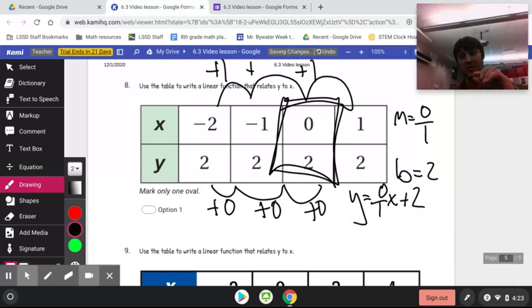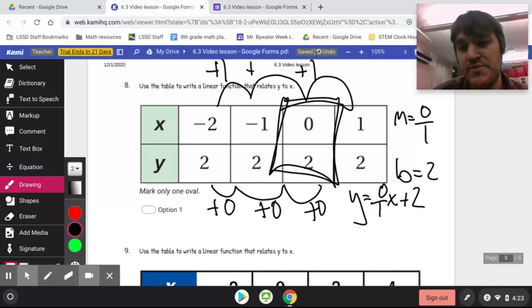So this equation would look like y equals 0 over 1 x plus 2. Now, here's the thing. 0 over 1 is just 0, and 0 times x is just 0, because anything times 0 is 0.